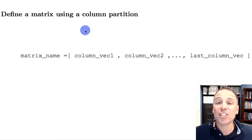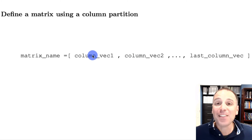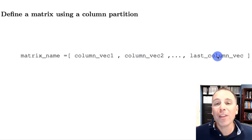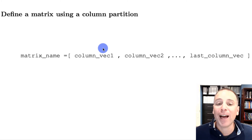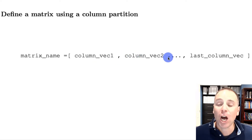Let's look at the MATLAB syntax to define a matrix using its column partition. We have the variable name on the left-hand side of the assignment operator. On the right-hand side, we delimit the matrix with square brackets, and inside we place predefined column vectors — column one, column two, and so on — separated by commas. The comma tells MATLAB to treat the element on the left as a separate column from the element on the right. All column vectors should have the same dimension.